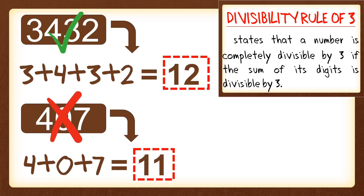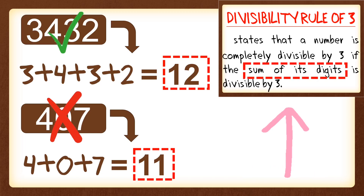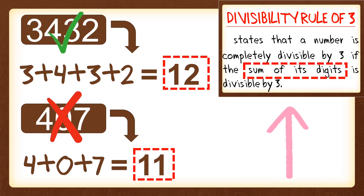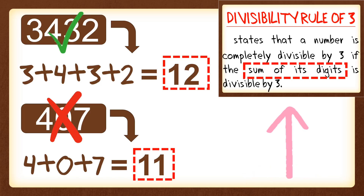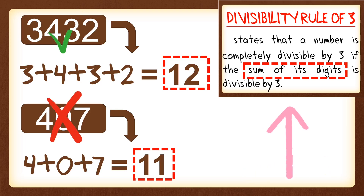As a reminder, for the divisibility rule of 3, we get the sum of the digits and determine if that sum is divisible by or a multiple of 3. If it is, then the original number is also divisible by 3.